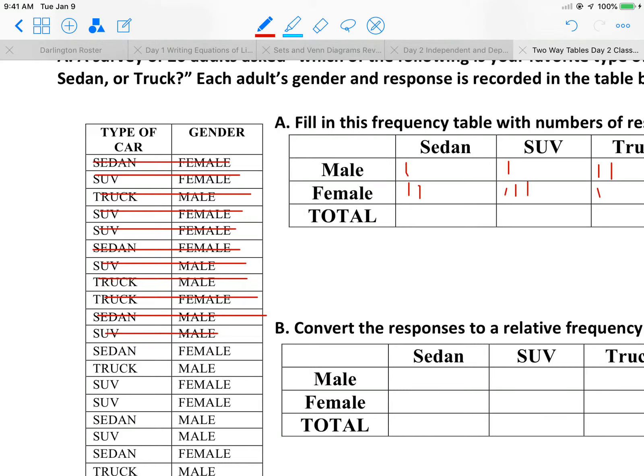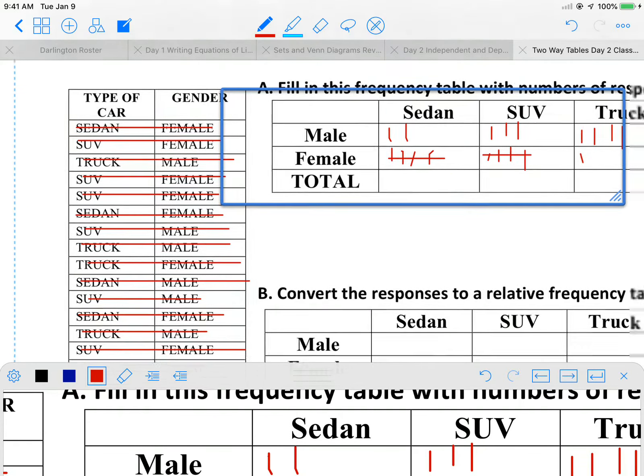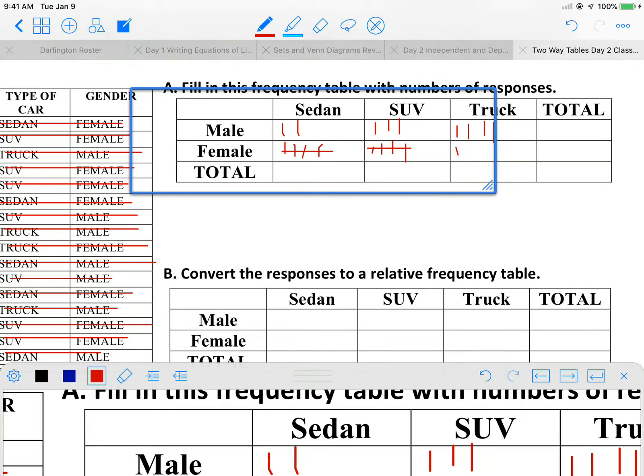And I can always double check myself at the end because these numbers should add up to the 20 total people that were indeed surveyed. So as we come through, get it going, we've got our sedan female, our truck male, and our sedan female.